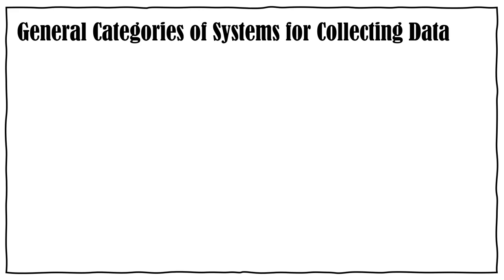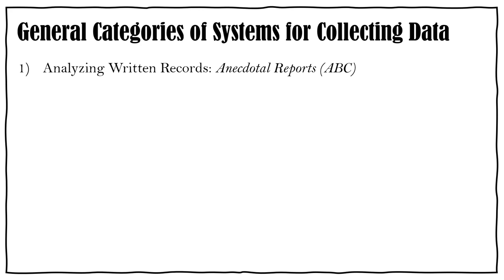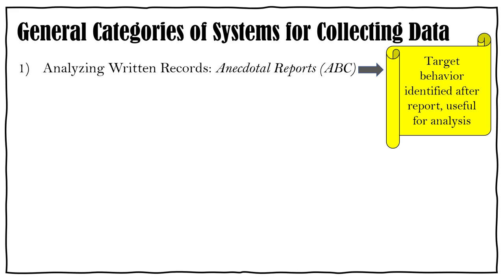We have some general categories of systems for collecting data. The first is written reports, called anecdotal reports. This is when the teacher, paraprofessional, or whoever is in the room writes a full report of what's going on with the behavior, what's happening in the environment, and when the behavior occurs. These reports are really good for identifying a target behavior and figuring out when and under what conditions it typically occurs. Use these written reports as a good starting point to tell you what the behavior looks like and when you need to observe.